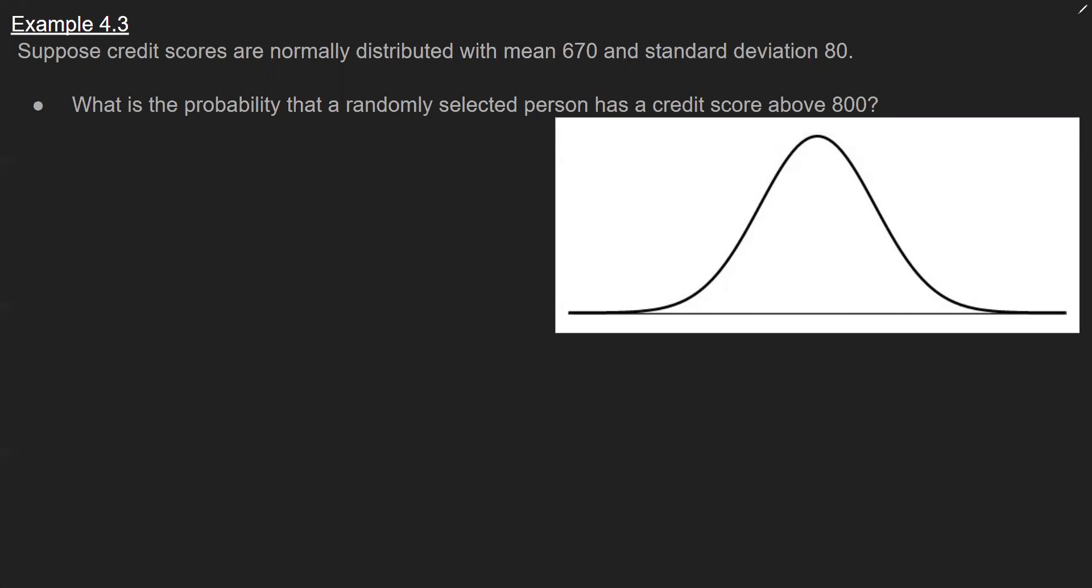In this problem, you were given a description of credit scores that follow a normal distribution with some parameters. So the value we're looking at, our random variable, will be these credit scores. I'm going to call credit scores X. And as we mentioned earlier for unit 4, continuous distributions, the problem will tell you which distribution you are working with.